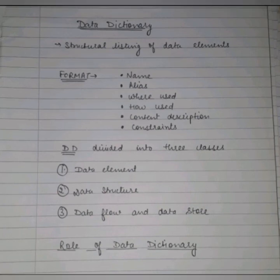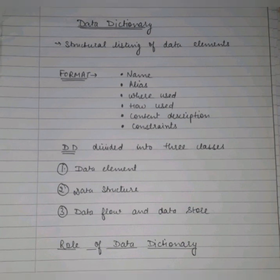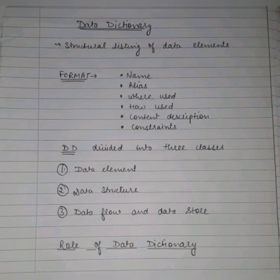A data dictionary consists of record types created in the database by system-generated command files. You can use command files such as SQL — for example, CREATE TABLE, CREATE UNIQUE INDEX, ALTER TABLE — and all the data available will appear in the database. Database users and developers can receive benefits from data dictionary documents. Hopefully, you now understand what a data dictionary is.